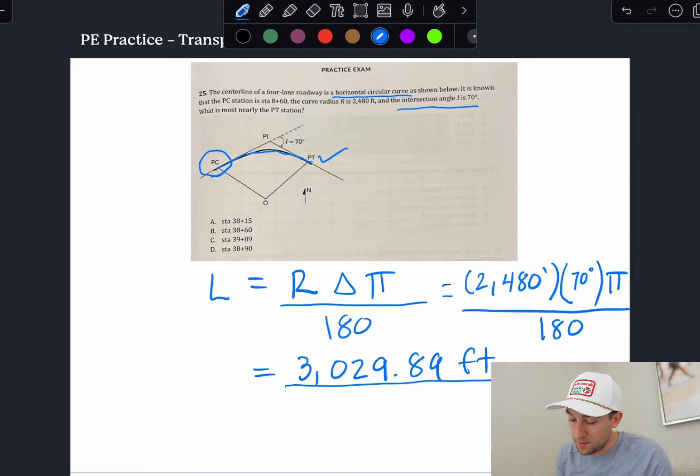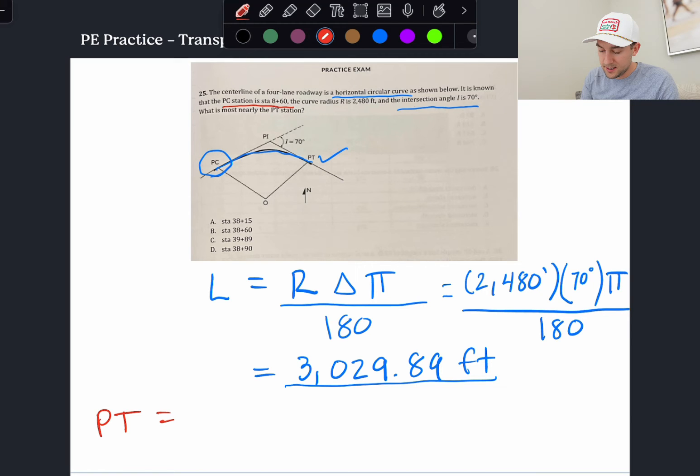So was the PC given? And it looks like it actually was right here. PC is station 860. If we're going from a station, let's draw this out. PT is going to be PC plus L.